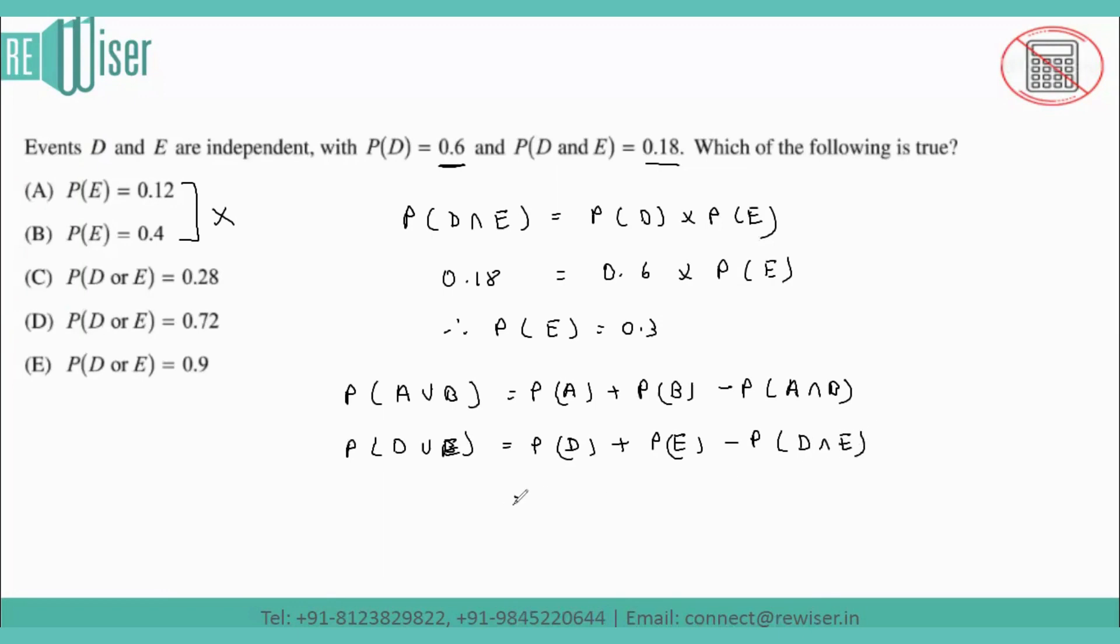So probability of D value is given in the question which is 0.6 plus probability of E we found out is 0.3 minus the intersection value which is 0.18. So we get the final answer as 0.9 minus 0.18 which equals 0.72. So the probability of D union E is 0.72. So option D is the correct answer for this question. Thank you students.